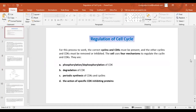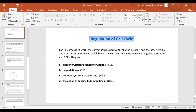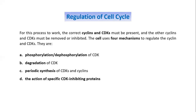In the previous lecture, we studied the different four mechanisms in the regulation of the cell cycle: the combination of the cell cycle, phosphorylation, activation, deactivation. The four mechanisms involved in the phosphorylation and de-phosphorylation of CDK. It is very important to degrade the different CDKs after a particular function, then the periodic synthesis of CDK, and the exact mechanism of CDK-inhibitory proteins. We will now explain the fourth one — the exact mechanism of CDK-inhibitory proteins — in detail.